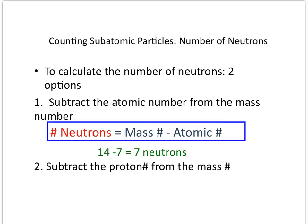Once you know the mass number and the atomic number, all you have to do is subtract them from each other to get the number of neutrons. Remember that the mass number represents the protons and the neutrons within the nucleus, while the atomic number just represents the protons. So by subtracting the atomic number from the mass number, you will get the number of neutrons in the atom.